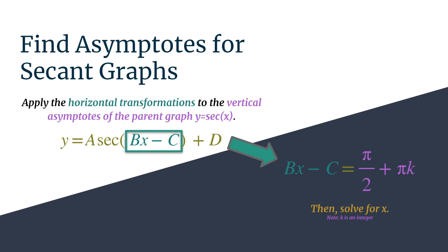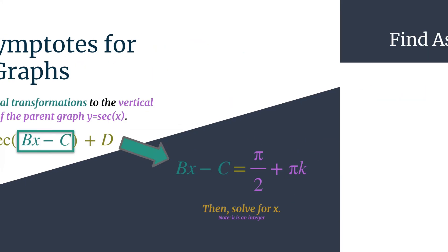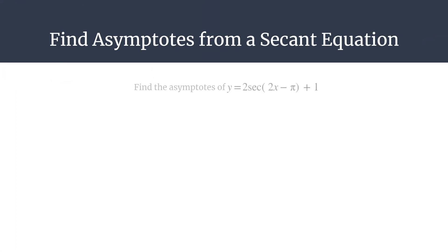Okay, so let's look at an example to see how this works. Let's say we want to find the vertical asymptotes of this equation, y equals 2 secant of 2x minus pi plus 1. So we know our trick is to take the inputs of the secant function, so it's 2x minus pi, and set those equal to our parent asymptotes of secant, which we know are pi over 2 plus pi k.